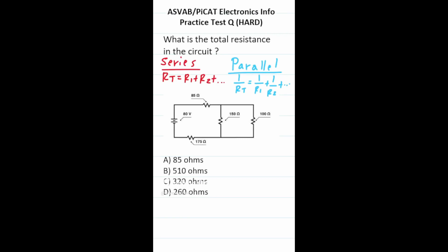This ASVAB PiCAT Electronics Information Practice Test question says, what is the total resistance in the circuit? If you look at our circuit here, you can see that we have resistors that are in series as well as parallel. The first thing we have to do is calculate the total resistance of these two resistors that are in parallel with each other. To do that, we're going to use this formula here.